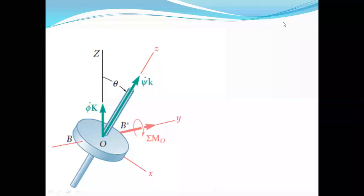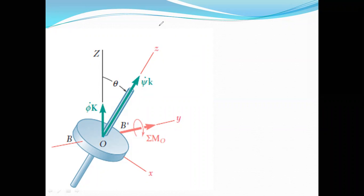To recap what we had done till now: first, we derived the Euler equations of motion, then applied the Euler equations of motion to the gyroscope. While applying Euler equations of motion on the gyroscope, we said the equations of motion need to be solved, and the first solution we gave was steady precession.